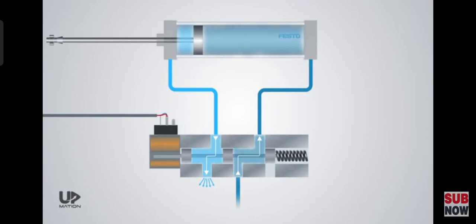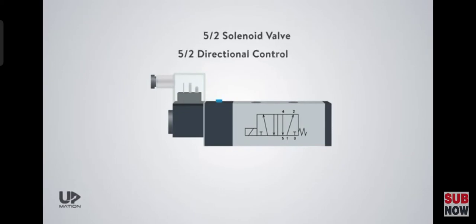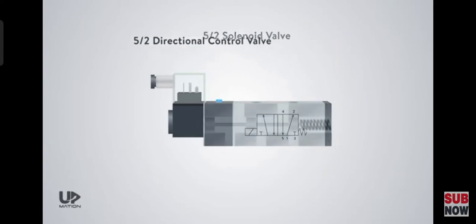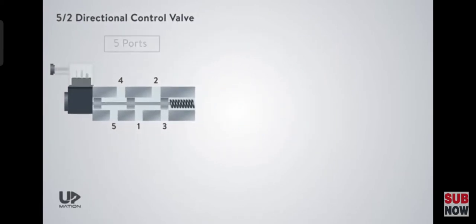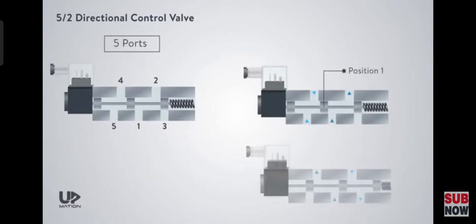Now, it's time to learn how these valves are called and how to read their graphic symbols. This valve is known as a 5x2 solenoid valve or a 5x2 pneumatic directional control valve. The first digit is for the number of ports the valve has. And the second digit is for the number of states the spool can be in.